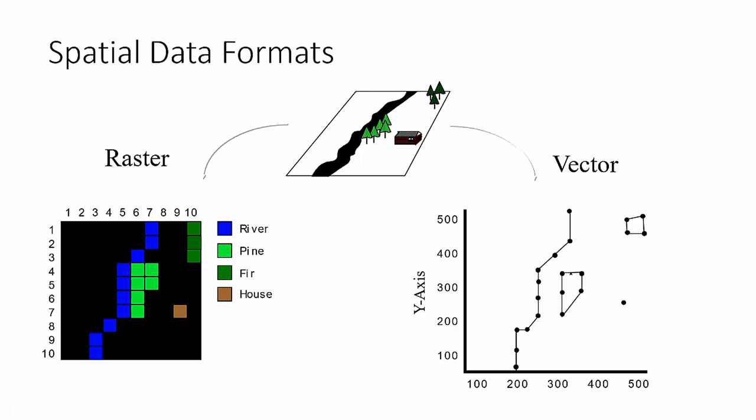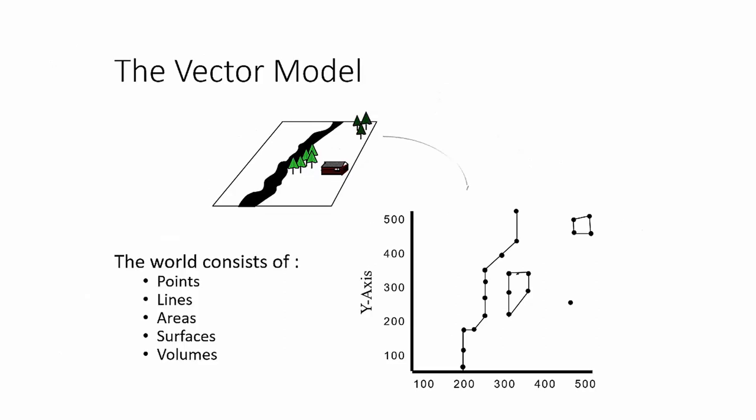Now that we have position and attributes, let's talk about the different spatial data formats we typically use to store spatial information: the vector data model and the raster data model. Let's start with vector.